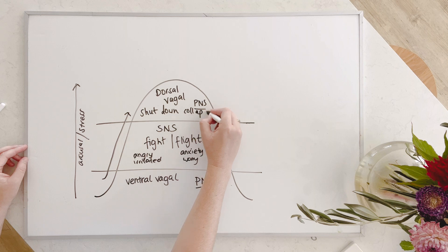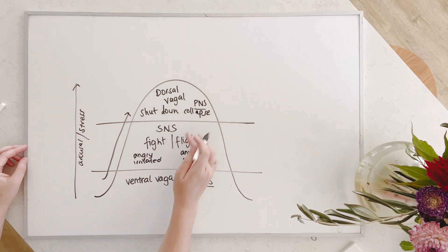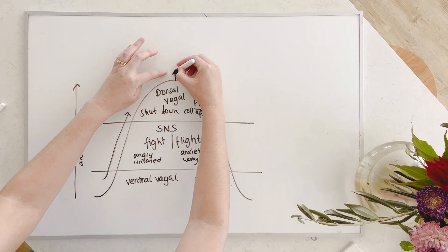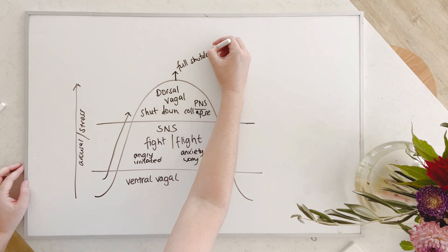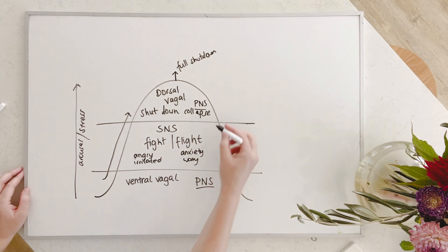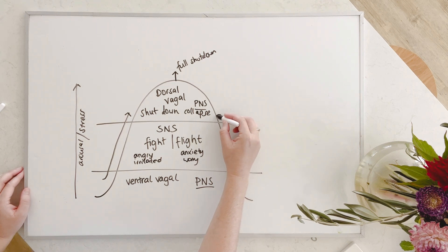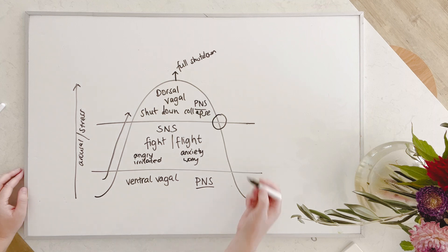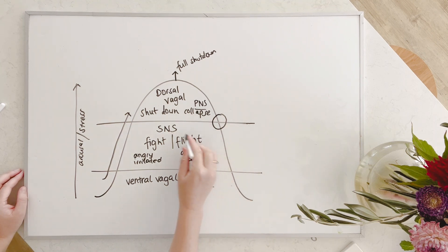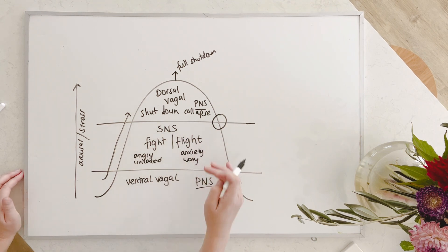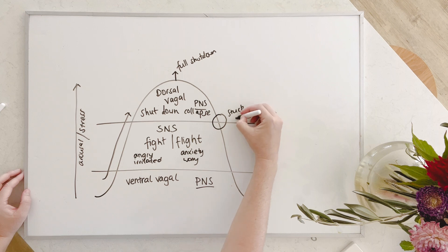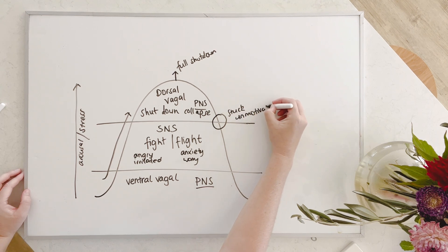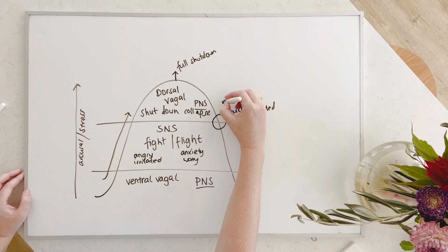But there are different levels of dorsal vagal. So all the way at the top here, this would be our full shutdown. So this would be collapse or fainting. But here, closer to sympathetic, or mixed with sympathetic energy, we might feel all the things we feel here, anxious, worried, angry, irritated, but also feel stuck and unmotivated. So this is a place of shutdown with fear.